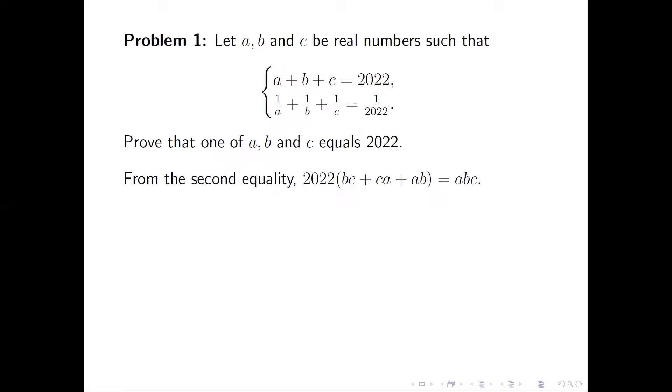Now we see all three elements in Vieta's formulas. First, we have A + B + C, which is 2022. We also see a relation between the second and third elements in Vieta's formulas. The second element, BC + CA + AB, times 2022 equals the third element, ABC.